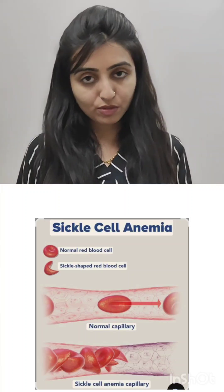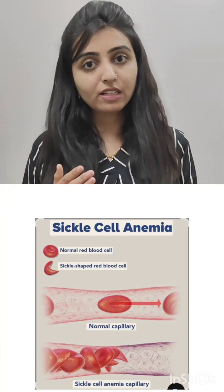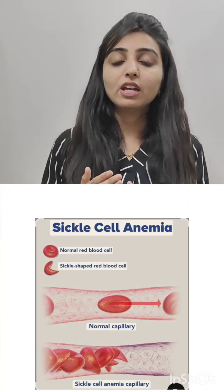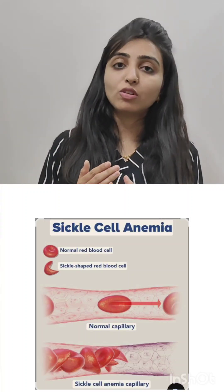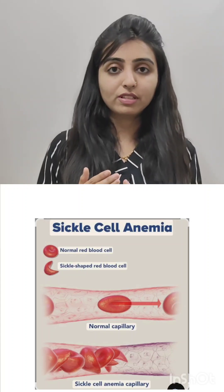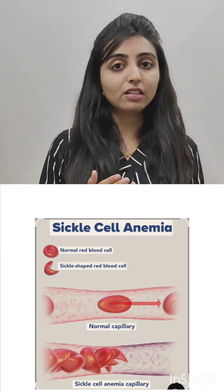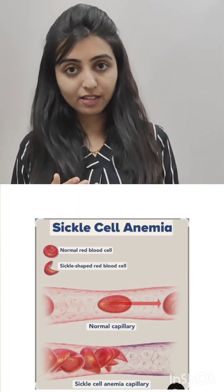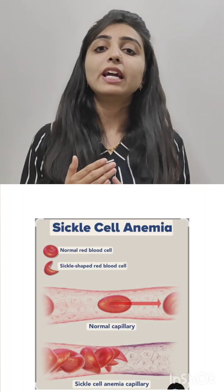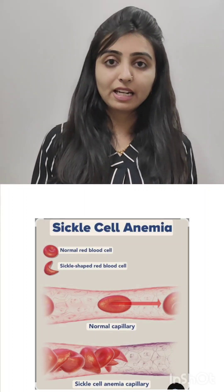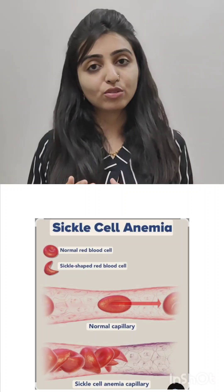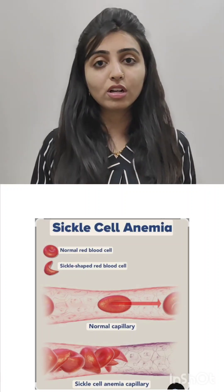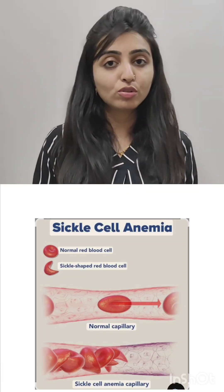The clinical features include hepatosplenomegaly, and in children there is growth retardation. Due to occlusion of vessels in the ankle, there is recurrent leg ulcer. There is also dactylitis and avascular necrosis of the femur, all occurring due to occlusion of vessels.